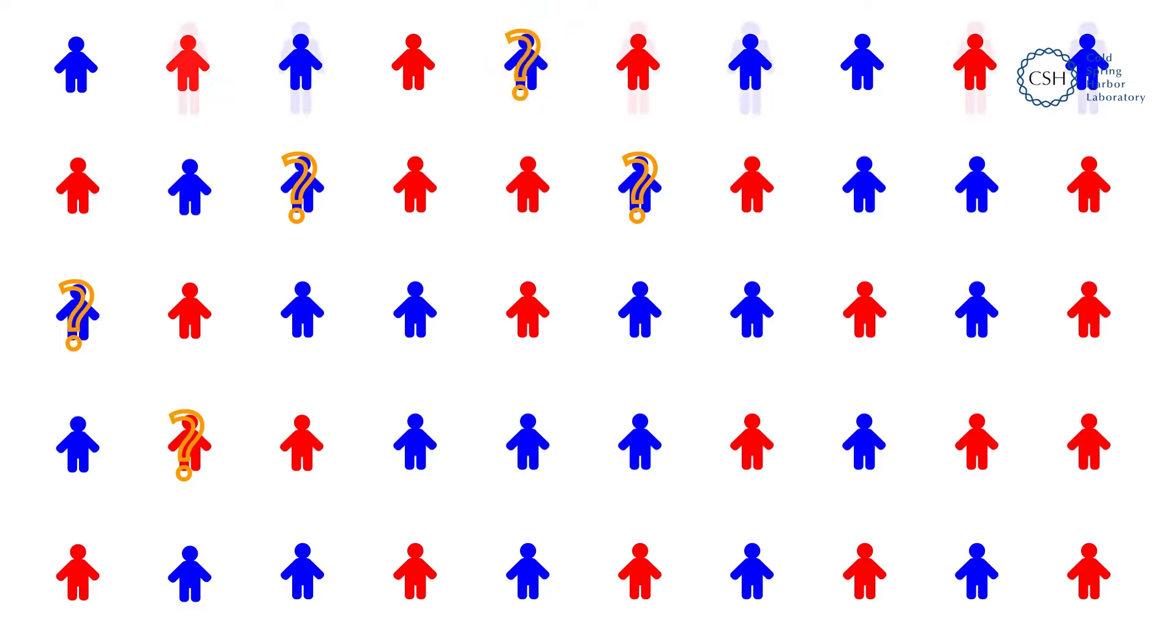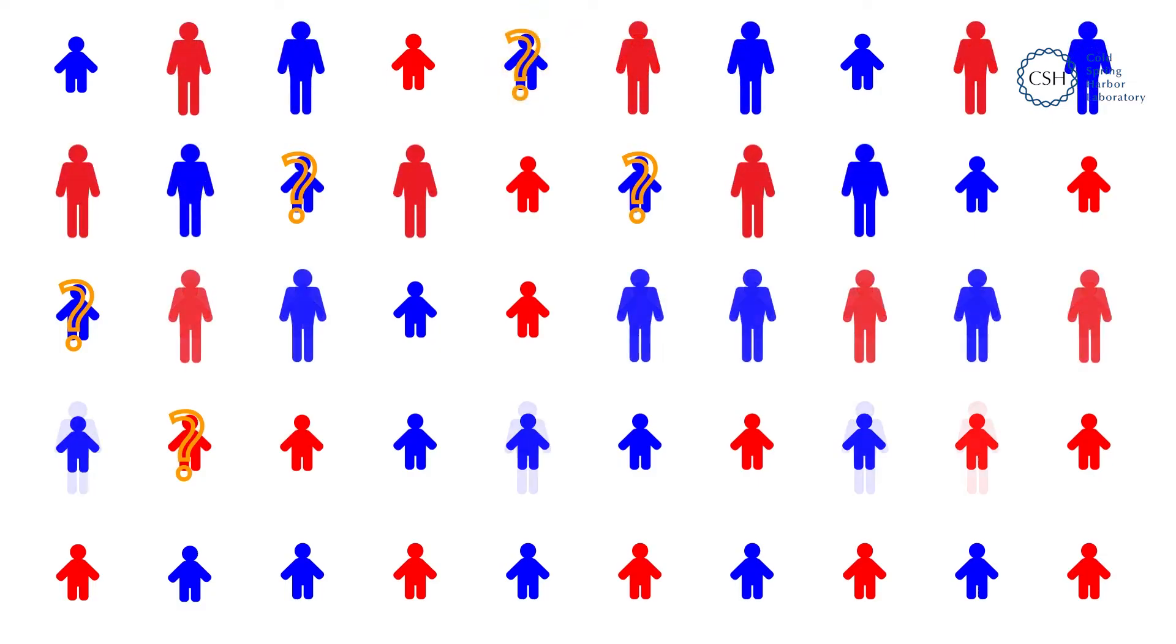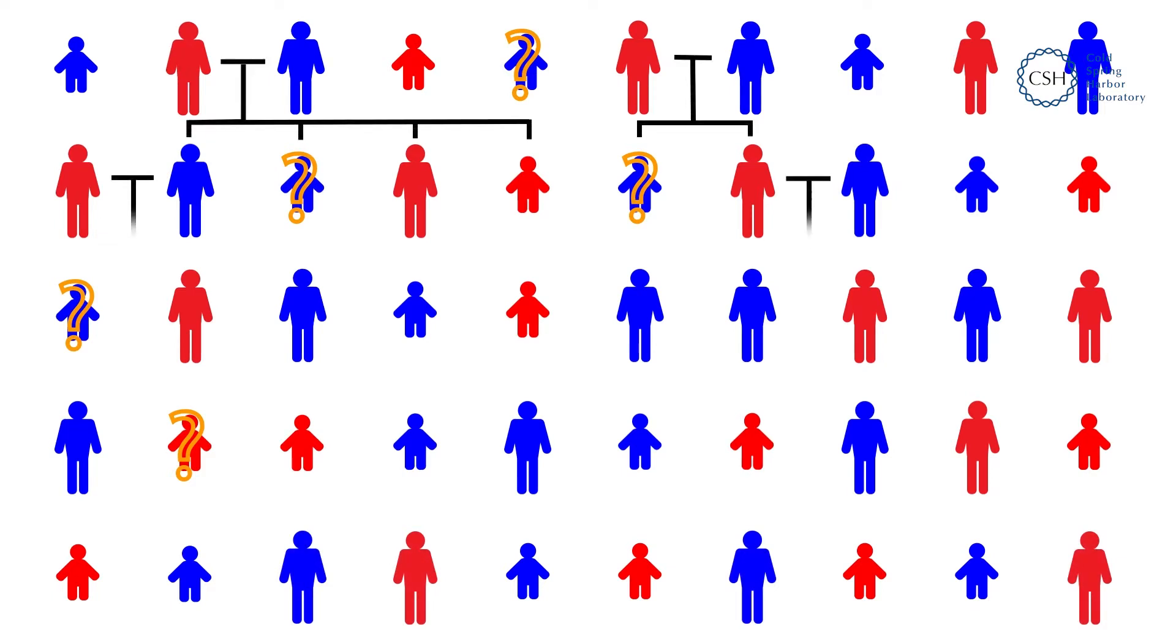One thing we do know is that genetics play an important role in determining whether a child is born with ASD. Over the past two decades, scientists at Cold Spring Harbor Laboratory have been working to identify the genetic origins of ASD.